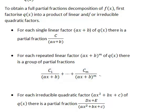But what happens if we have an irreducible quadratic factor as part of the expression? If it is just a single irreducible quadratic factor that is not repeated, it has a partial fraction which is a linear function on the numerator — dx plus e, where both d and e are constants — divided by the irreducible quadratic.